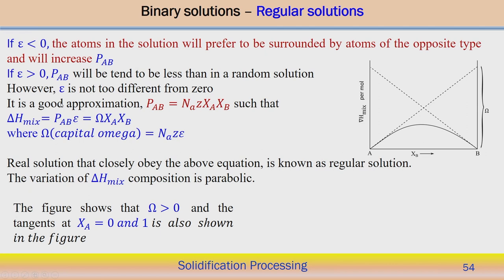If epsilon is less than zero, atoms in the solution will prefer to be surrounded by atoms of the opposite type, increasing the number of AB bonds. This indicates whether the solution is endothermic or exothermic — heat can be absorbed or released during mixing, represented by the enthalpy of mixing. When epsilon < 0, P_AB, the number of bonds between A and B atoms, will increase.